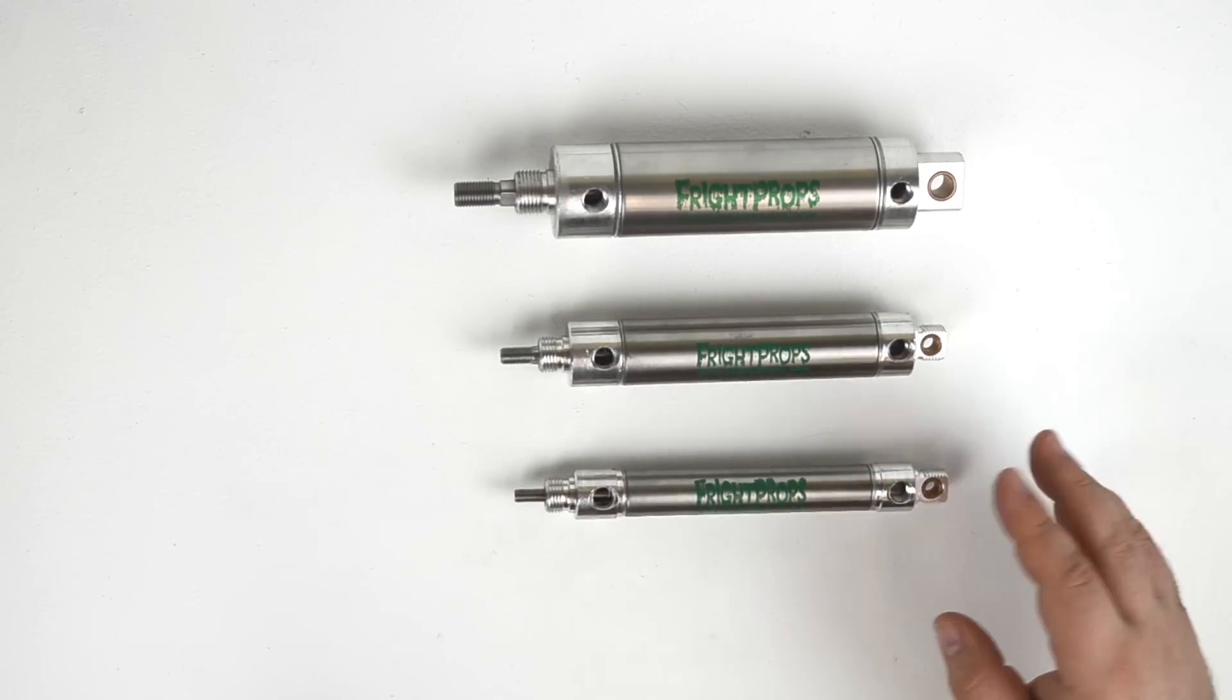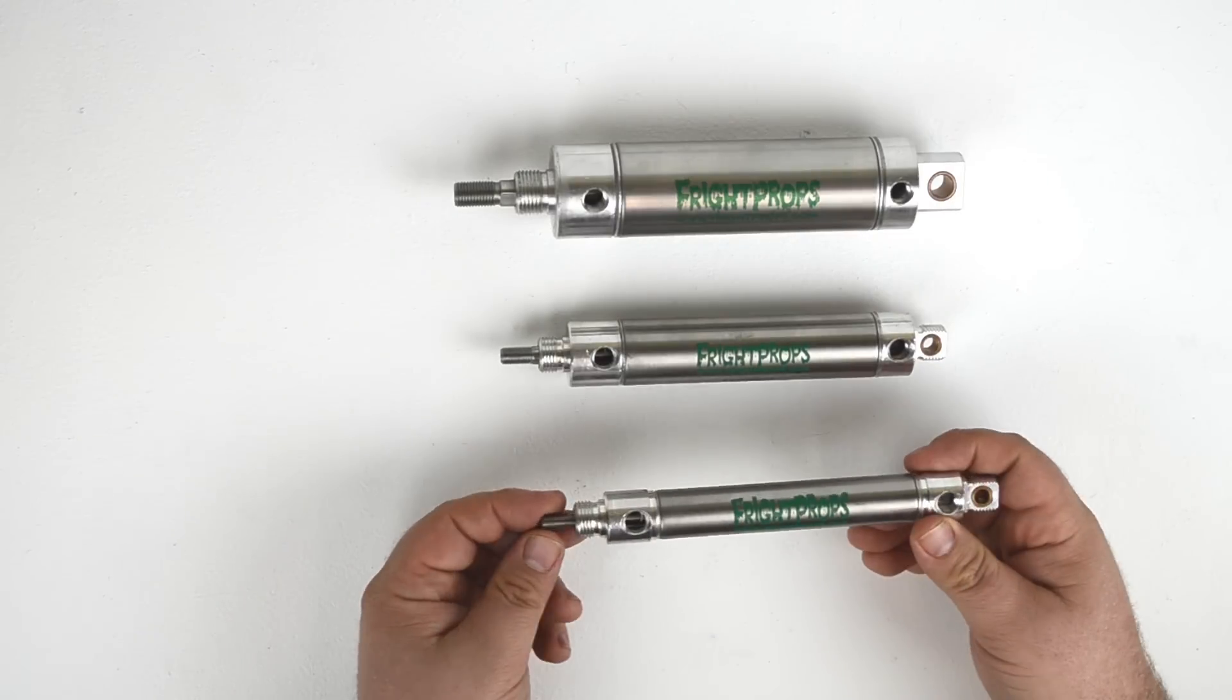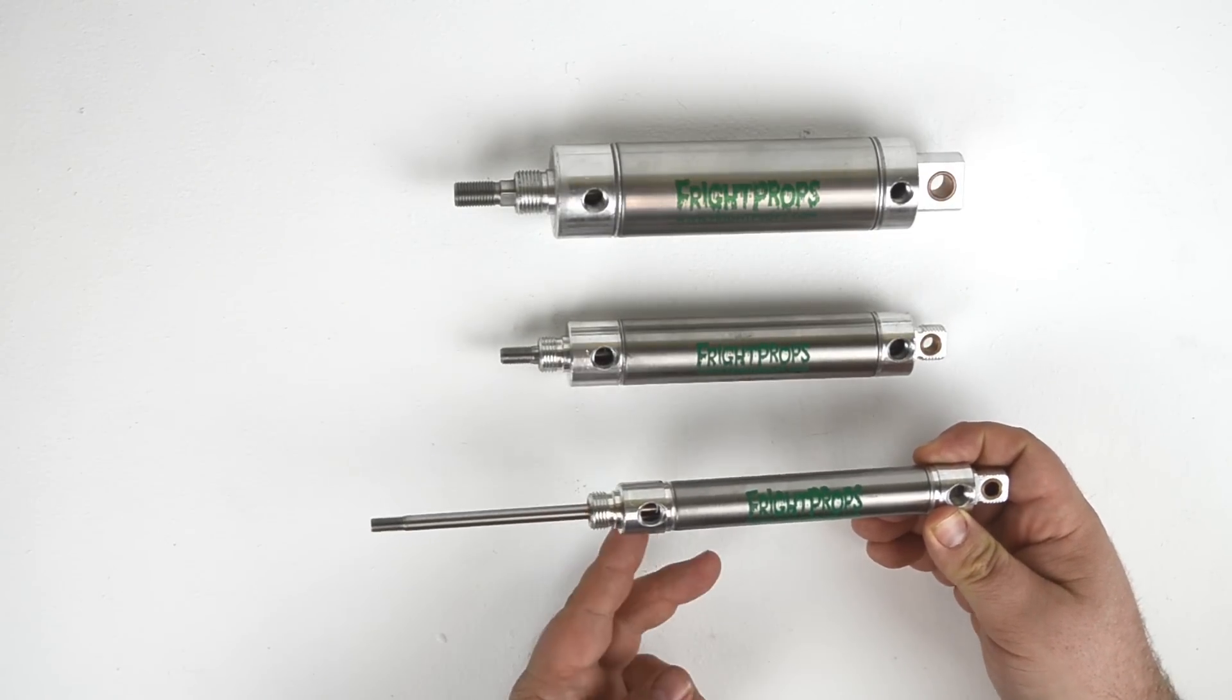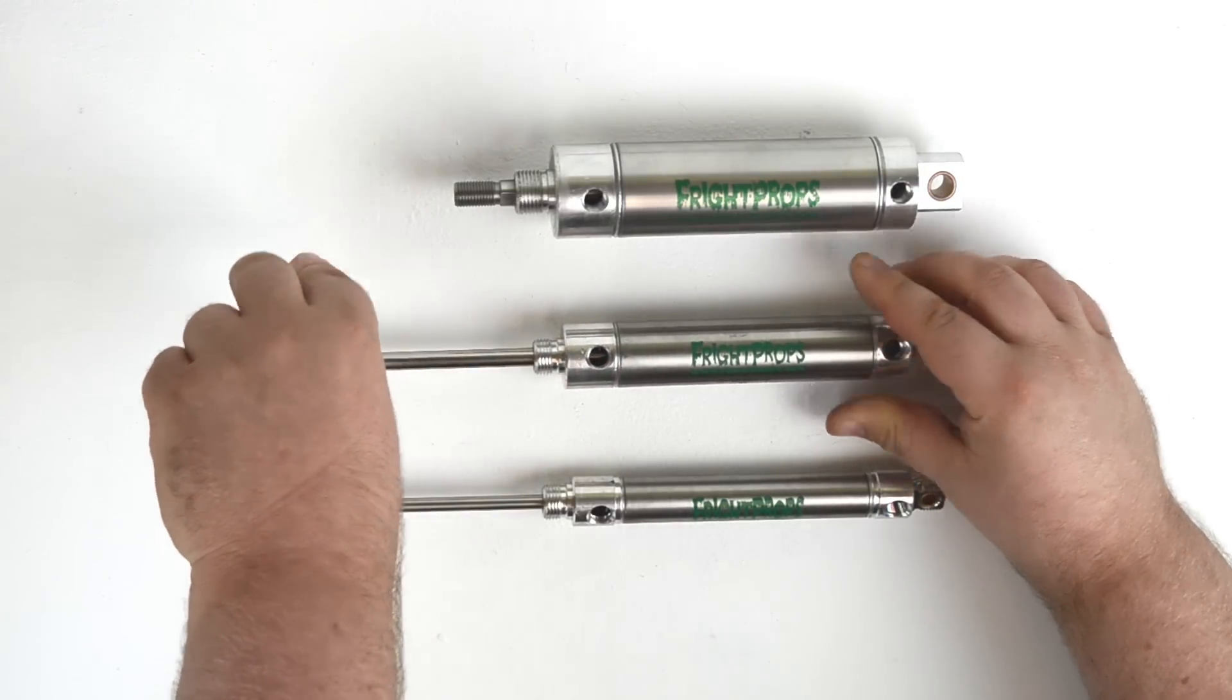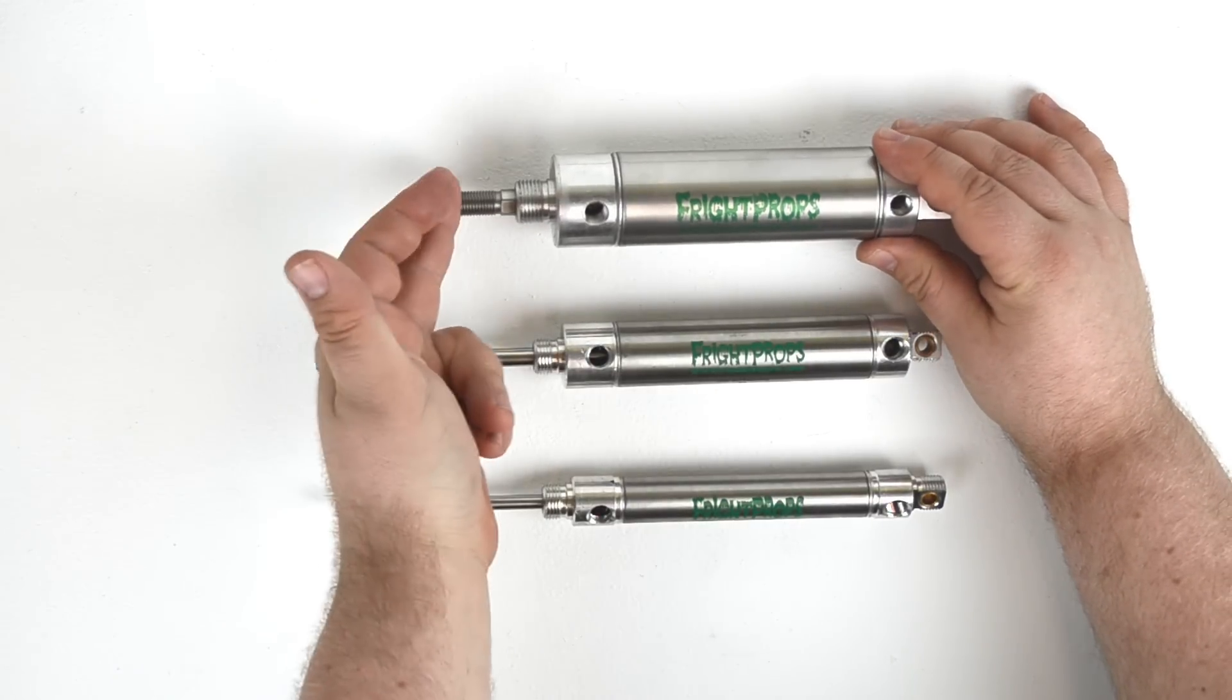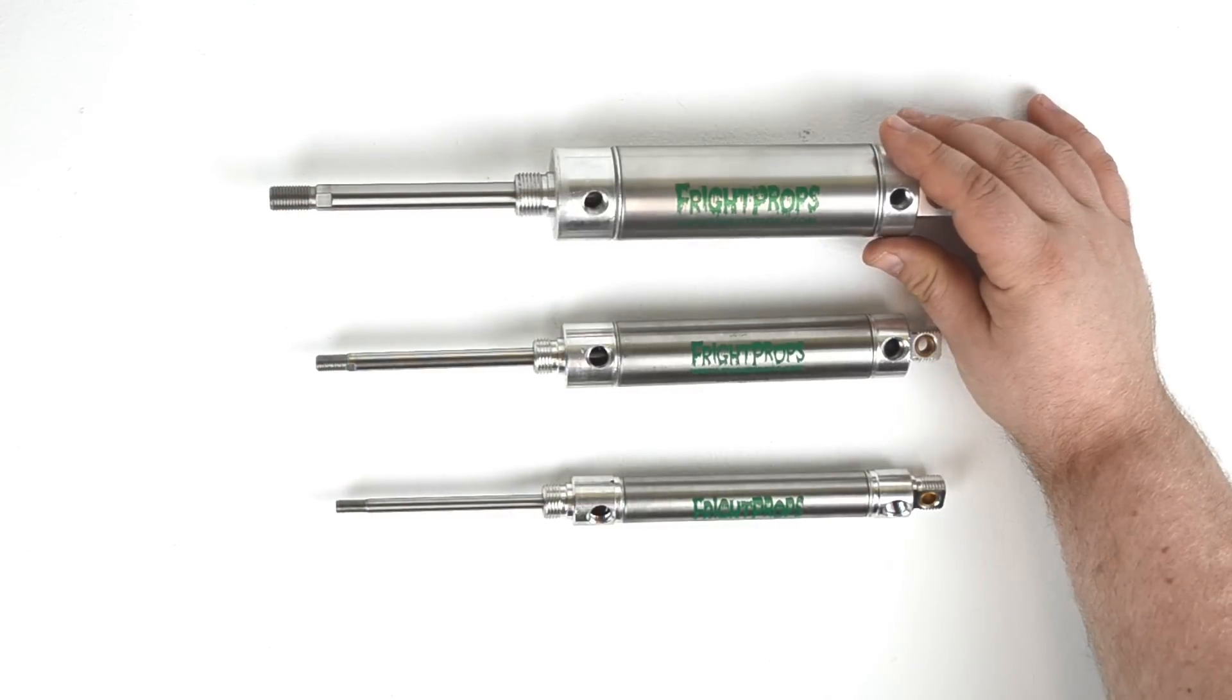There's two important terms you're going to hear when talking about cylinders. One is stroke and the other is bore. Stroke refers to how far the cylinder rod extends. In this case, all three of the cylinders shown here have a three inch stroke. So the cylinder extends from zero to three inches at its full length.